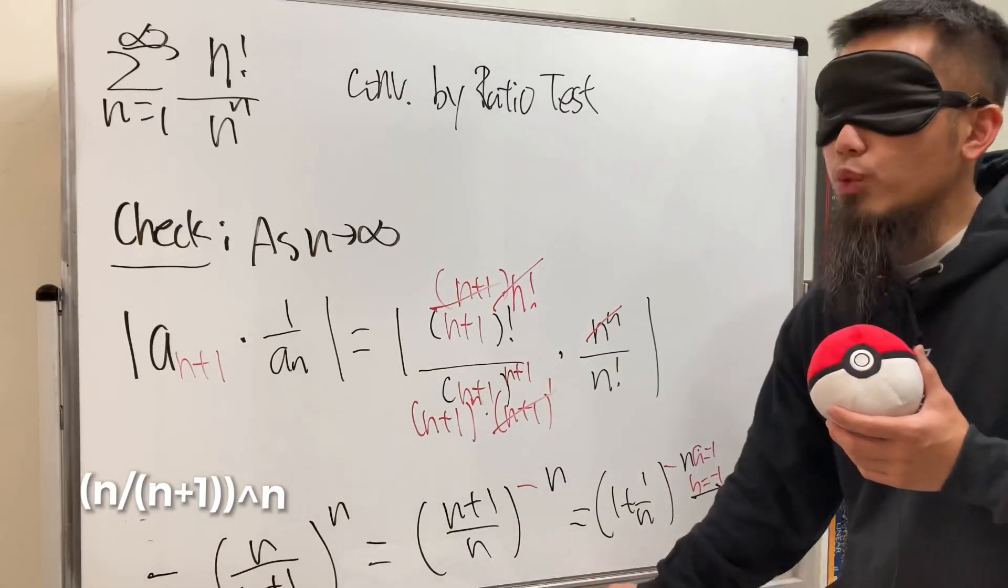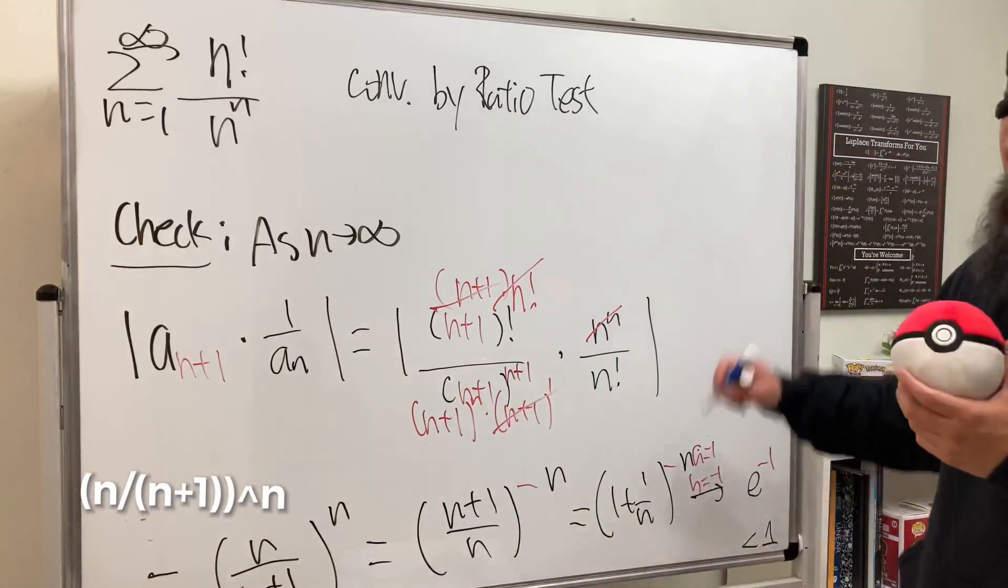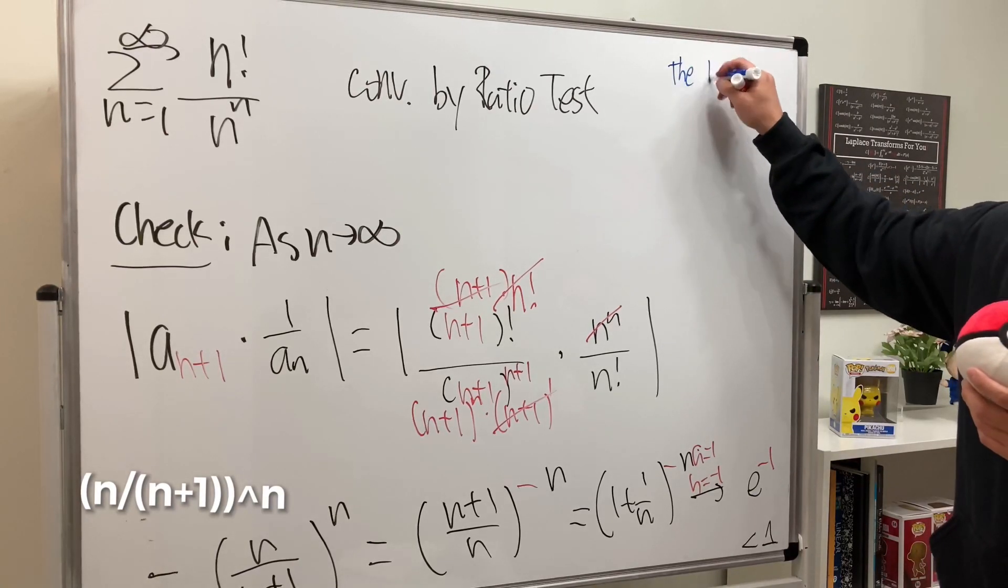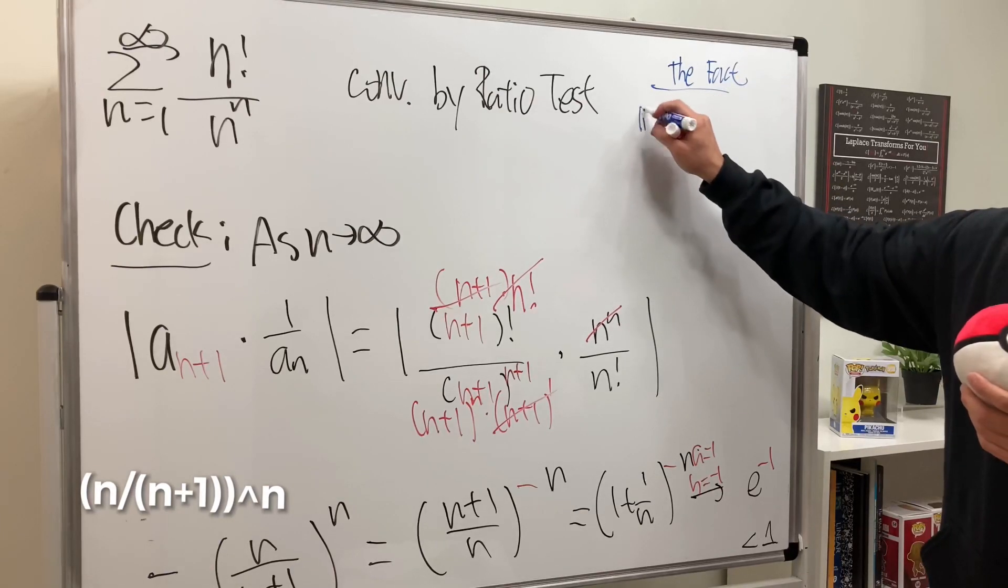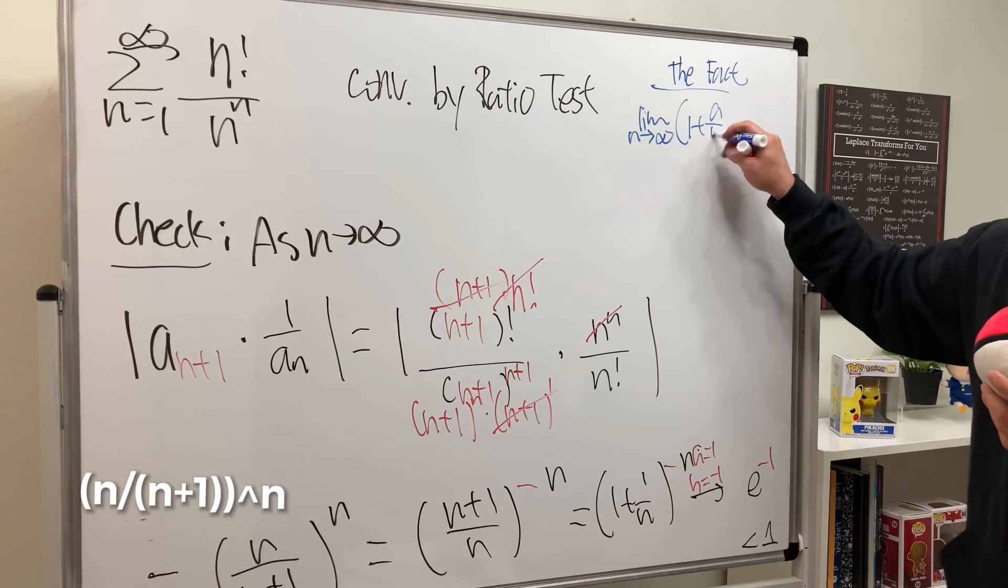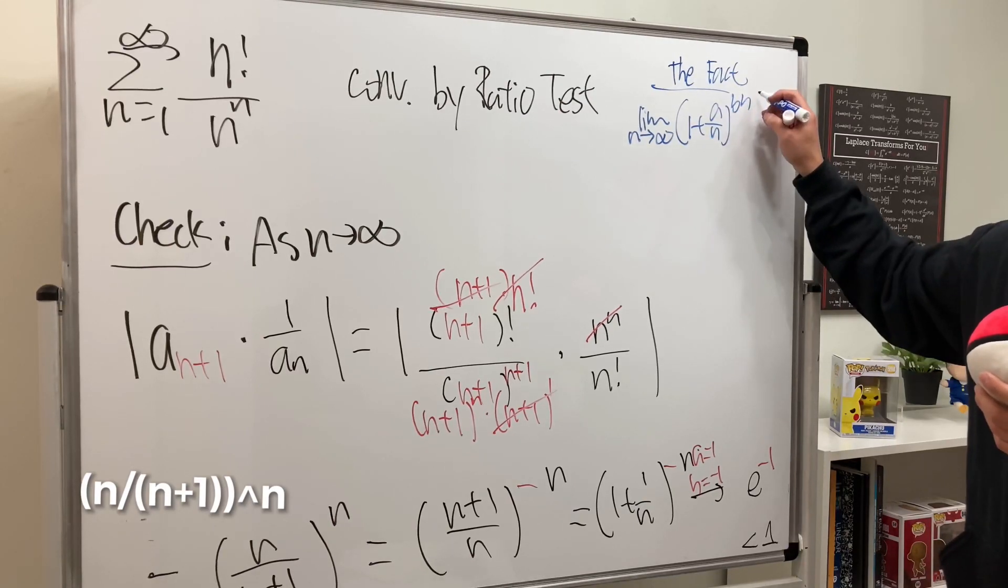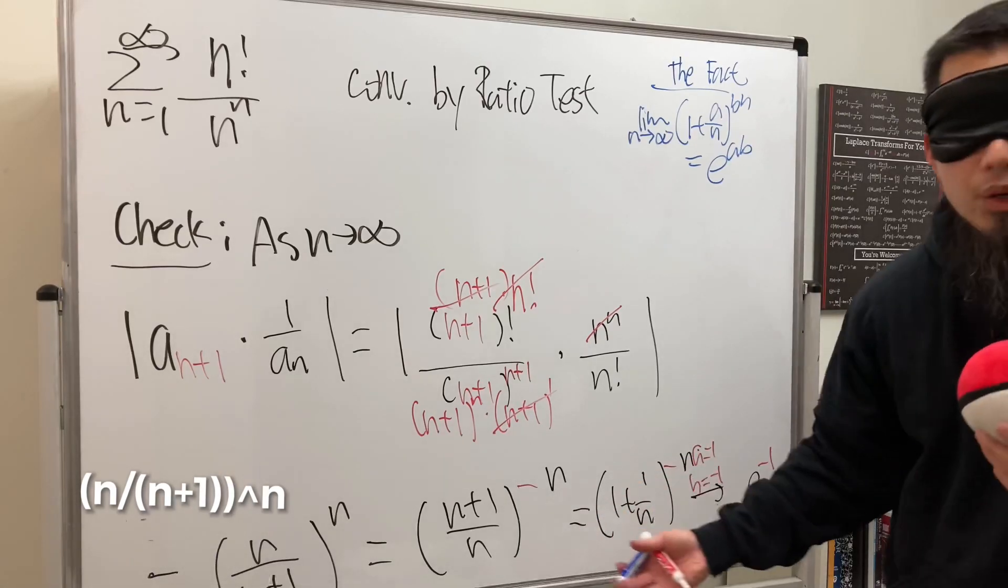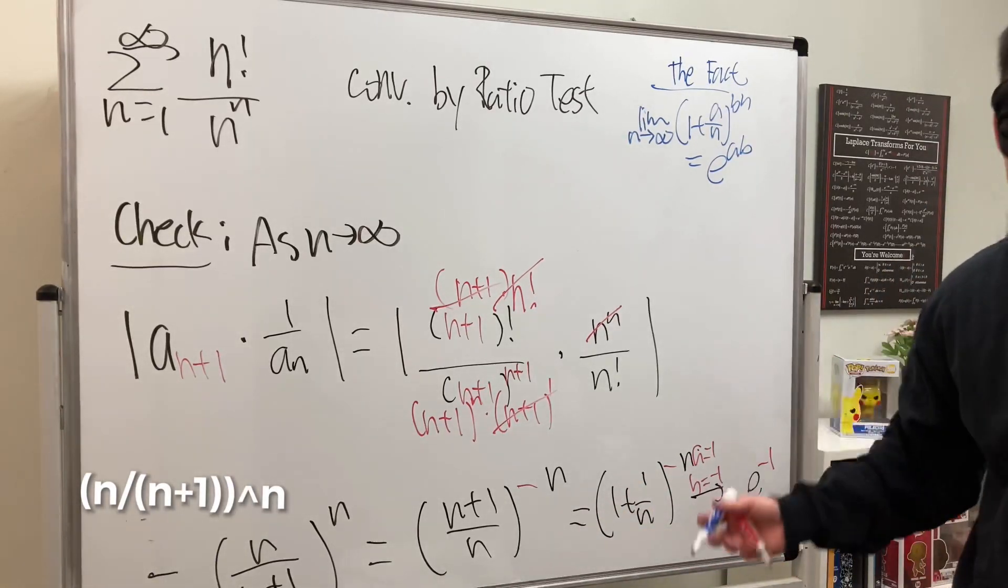And for the people who like to know how we get the limit for that, I will put this down right here for you guys. This is called the fact, which is saying if you have the limit as n goes to infinity of (1 + a/n) raised to the bn power, this right here will give you e to the ab power. And that's exactly what I did right here. All right, so that's it.